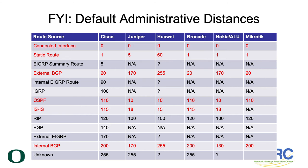The table on the screen shows the default administrative distances utilized by different vendors on their routers. Remember that the lower value is preferred over the higher value. For connected interfaces, all vendors use a value of 0. For static routes, all vendors use 1 with the exception of Juniper and Huawei, who use 5 and 60 respectively. For external BGP routes, Cisco, Brocade, and Microtech use 20, whereas Juniper and Nokia use 170, and Huawei uses 255. For OSPF routes, you see similar groupings with the same values for Cisco, Brocade, and Microtech, whereas Juniper, Huawei, and Nokia share the same values.